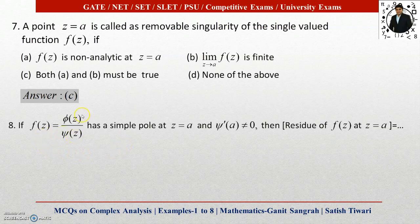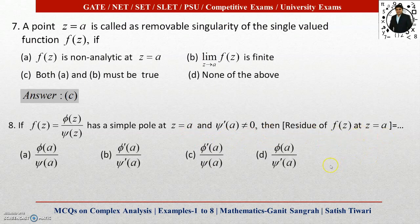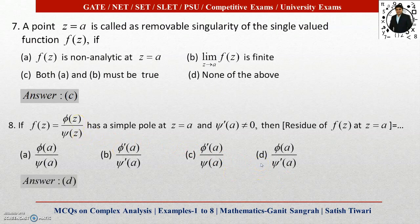Example eight: if f(z) = φ(z)/ψ(z) has a simple pole at z = a, and ψ'(a) ≠ 0, then the residue of f(z) at z = a is given by — the condition ψ'(a) ≠ 0 means the derivative of the denominator is used. Options A and C (without ψ') are eliminated. For a simple pole, we differentiate the denominator (not the numerator) and put z = a. The residue = φ(a)/ψ'(a), so option D is correct.